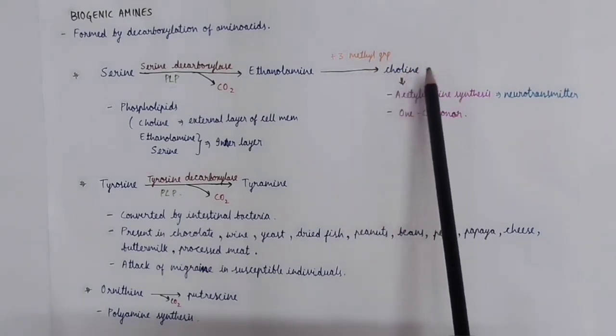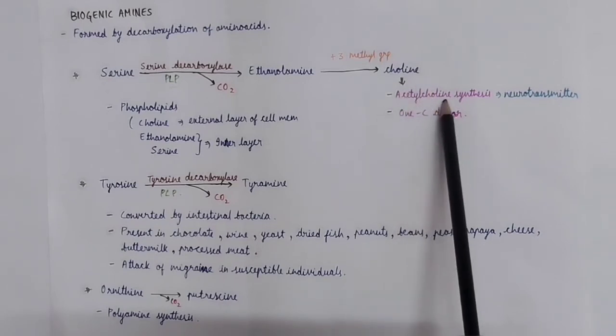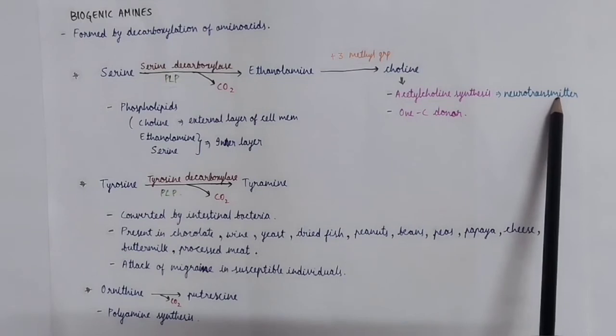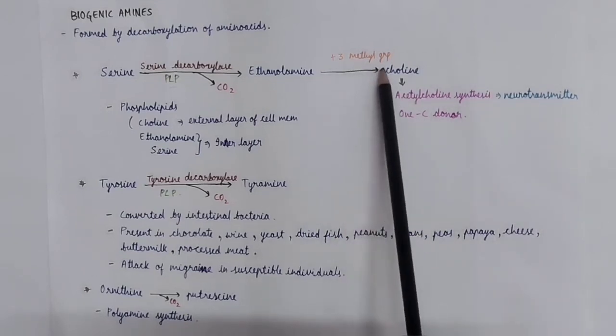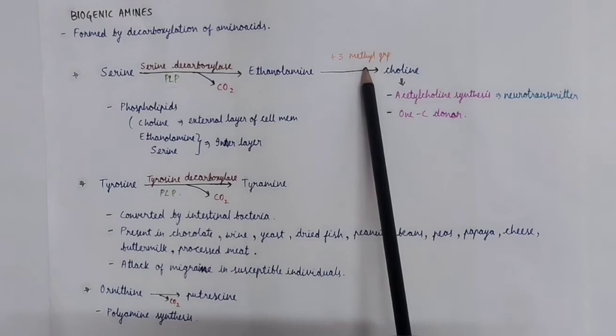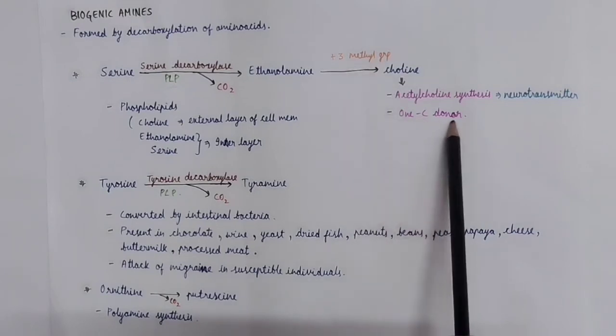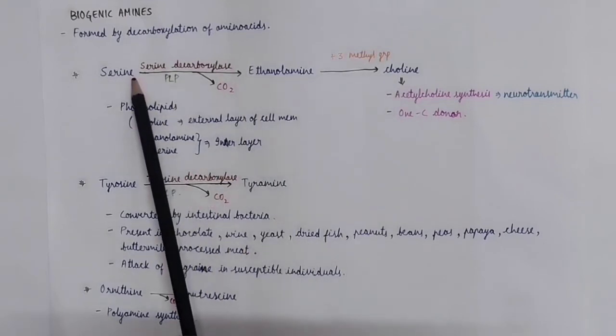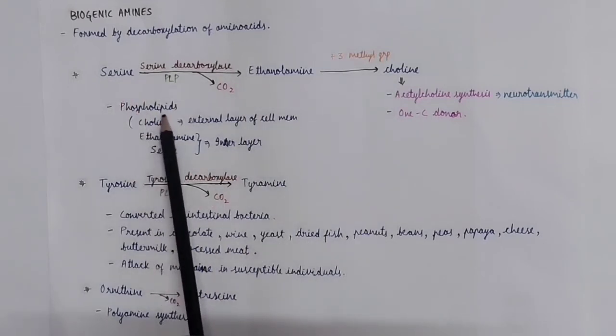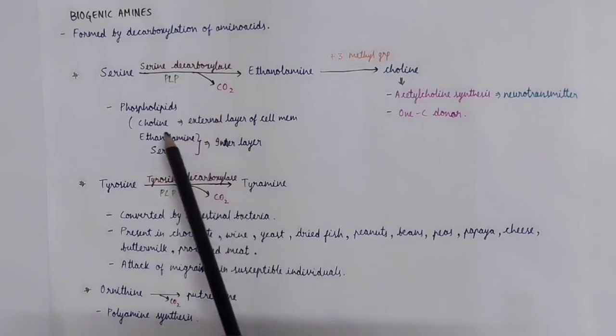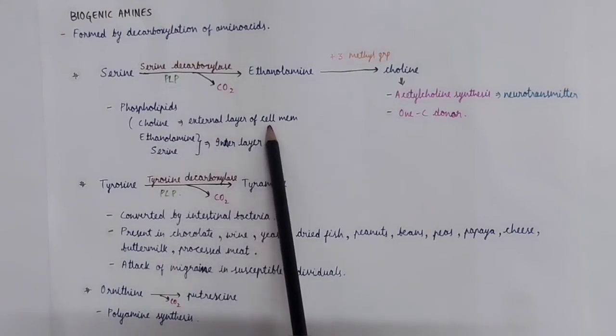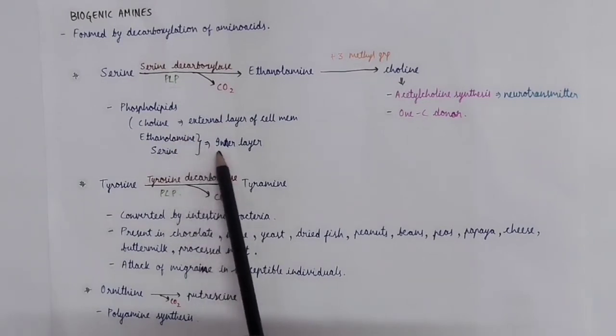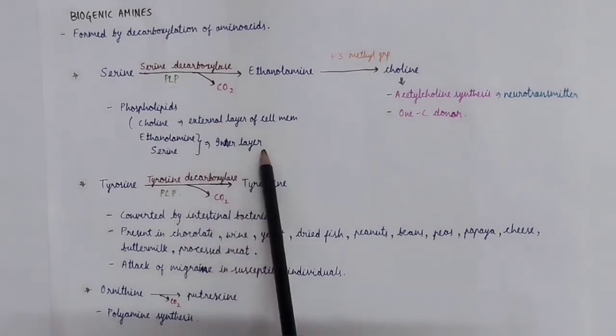This choline can be used for the synthesis of acetylcholine, which is an important neurotransmitter, and also these methyl groups can be removed, so it is an important one-carbon donor. All these are important components of phospholipids. Choline is present in external leaflet of cell membrane, whereas ethanolamine and serine are present in inner leaflet of cell membrane.